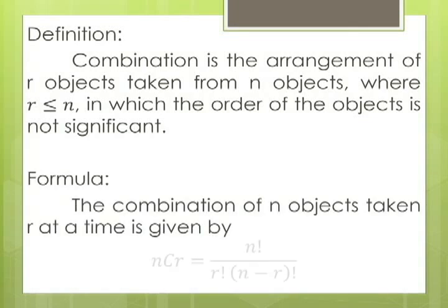The formula is given by the combination of n objects taking r at a time is equal to n factorial over r factorial multiplied by factorial of n minus r.